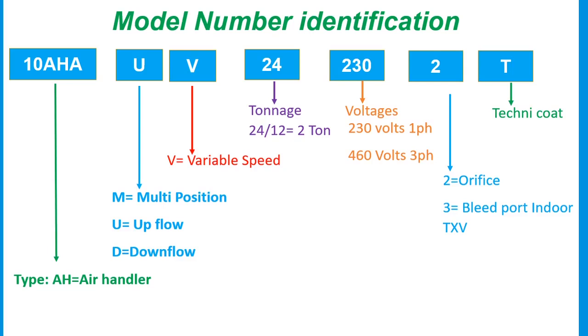In our previous discussion, we are just going to divide 24 by 12 in order to get the actual tonnage. So in this case, 24 divided by 12 equals 2 tons. The next is 230, which is voltage. 230 volts single phase. If this one is 460, that means it's 3 phase. The next is 2 or 3. 2 is orifice, 3 is bleed port indoor. TXV stands for thermostatic expansion valve. The next letter T is techno coat.